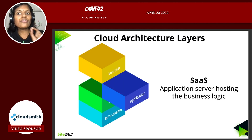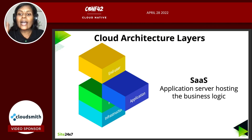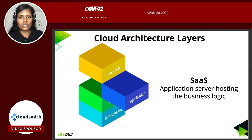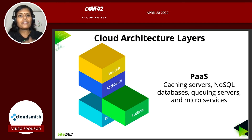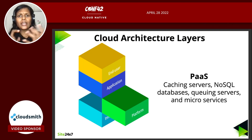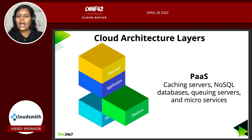The application layer is nothing but software-as-a-service. There are many such SaaS model vendors available which host the business logic. If you are a business owner, you have to be worried more about this software-as-a-service layer where your business logic is hosted, and leave the rest to the public cloud vendors. Underneath is the platform layer — platform-as-a-service — which comprises your caching servers, SQL databases, NoSQL databases, queues, and microservices. There are vendors to provide platform-as-a-service as well.